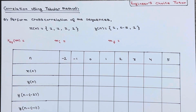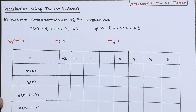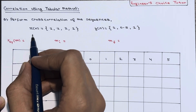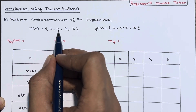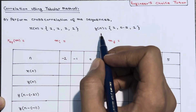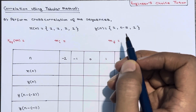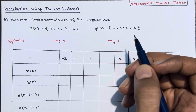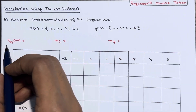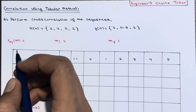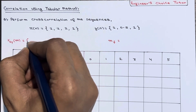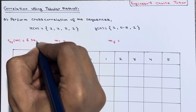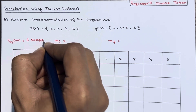Hi everyone, in this lecture we'll see correlation using the tabular method. We perform cross-correlation of the sequences x(n) = {1, 1, 2, 2} and y(n) = {1, 0.5, 1}. We have already seen this example in the last lecture and calculated that rxy(m) will contain six samples. Please watch the last lecture first and then come to this.